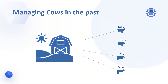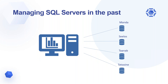Some years ago, a farmer could be living quite happily with four cows — they would have names like Rose, Flower, Daisy, and Bella — and the farmer knew each and every cow, talked to them every day, milked them into a bucket, and cleaned up after them. But no farmer can make a living like this anymore. And in the same way, some years ago, a DBA would only work with a few database servers, know them all and their function, and could log in and check them every day.